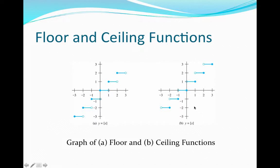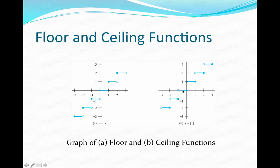On the other hand, the ceiling function values get mapped up. Again, the integers map to themselves: 1 goes to 1, 2 goes to 2, 3 goes to 3, 0 goes to 0, negative 1 goes to negative 1, negative 2 goes to negative 2, and negative 3 maps to negative 3. Looking at real numbers between 0 and 1, we round up, so anything between 0 and 1 gets rounded up to 1; anything between 1 and 2 gets rounded up to 2; anything between 2 and 3 gets rounded up to 3. Any negative number between 0 and negative 1 gets mapped to 0; anything between negative 1 and negative 2 gets mapped to negative 1; anything between negative 2 and negative 3 gets mapped to negative 2.